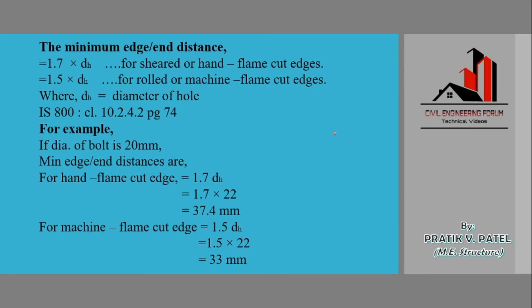For minimum edge or end distance, both edge and end distances use the same formula. For sheared or hand flame cut edges (manually cut), the minimum is 1.7 times the diameter of the hole (dh). For machine cut edges, the formula is 1.5 times the diameter of the hole. Machine cut gives a smaller distance because it produces a better finish. This is given under IS 800:2007, Clause 10.2.4.2, Page 74.